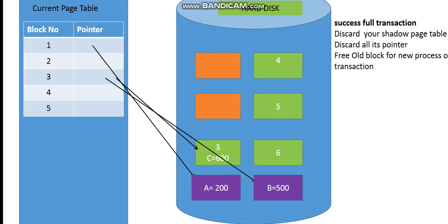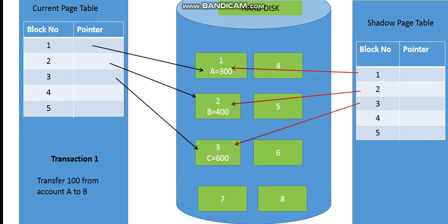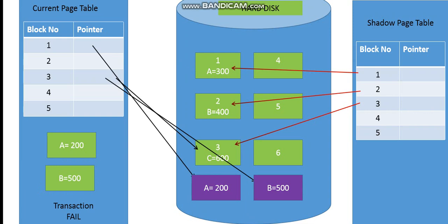Now let's see what happens if the transaction fails. As before, when the transaction starts executing, the current page table and shadow page table are both present. The blocks are brought into memory, modified, and stored in new free blocks. The current page table pointers point to the new blocks, but the shadow page table is still pointing to the old pages in the hard disk. However, in this case the transaction fails.